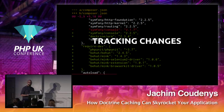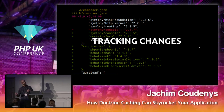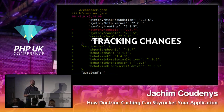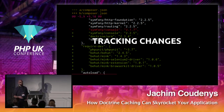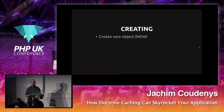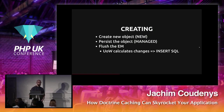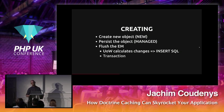Another area where we can get performance gains is understanding how change tracking works. Every time we flush to the database we have to calculate what changes occurred and how to persist them. If we create an object, it's in the new state. We persist it — it's in the managed state. We flush the entity manager, it calculates all changes, sees it was a new object, and creates insert statements inside a transaction.